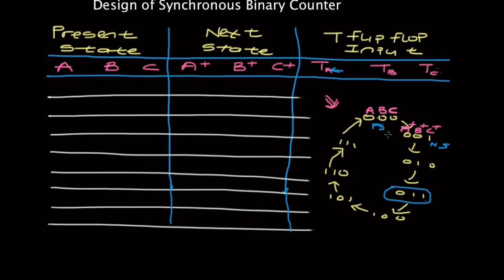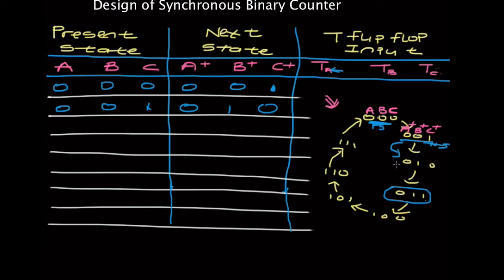Let's try filling in the table. You can start with any number, but it's logical to start from zero. So let's say our present state is 0, 0, 0 — therefore your next state is going to be 0, 0, 1. If our present state is 0, 0, 1, your next state is going to be 0, 1, 0. If the present state is 0, 1, 0, your next state is going to be 0, 1, 1. And if the present state is 0, 1, 1, your next state is going to be 1, 0, 0.